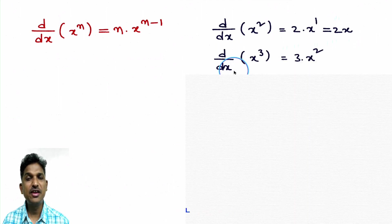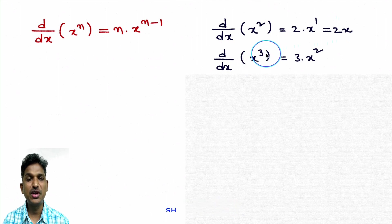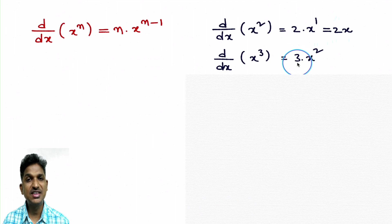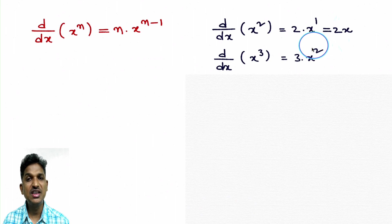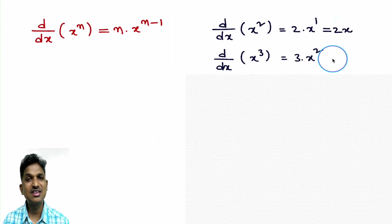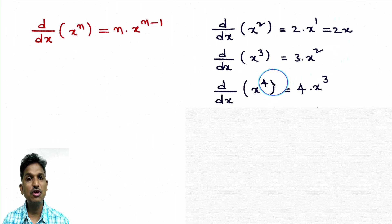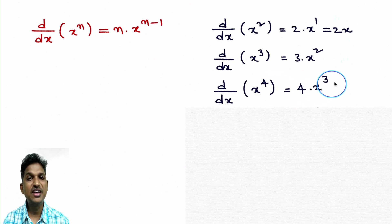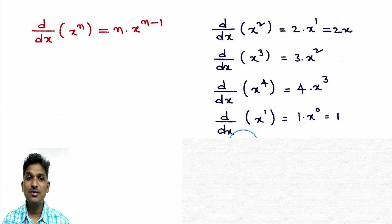Similarly, derivative of x cube — it is also of the form x power n. Derivative of x power 3: write 3 into x power 3 minus 1, which is 2. So derivative of x cube is 3x square. Derivative of x power 4 — you answer: it is 4 into x power 3.